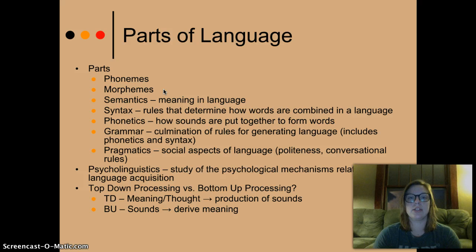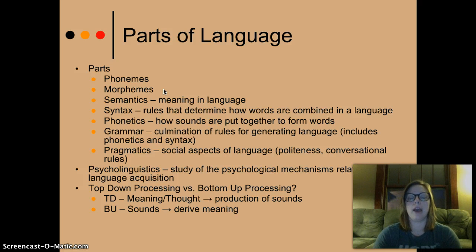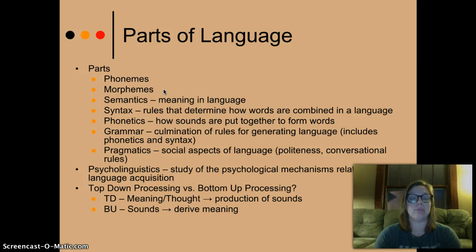Semantics — this is meaning in your language. It's semantics to understand that in the English, in the United States culture, 'apartment' means a two- or three-room house that you live in, whereas in Britain, 'flat' means the same thing.